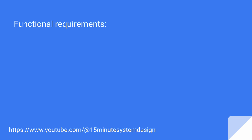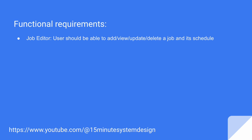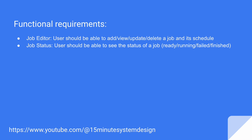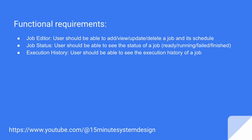Let's talk about functional requirements quickly. A user should be able to add, view, update or delete a job and its schedule. User should be able to see the status of a job as well — whether a job is ready to run, whether it's running, failed or completed. User should also be able to see the execution history of a job.